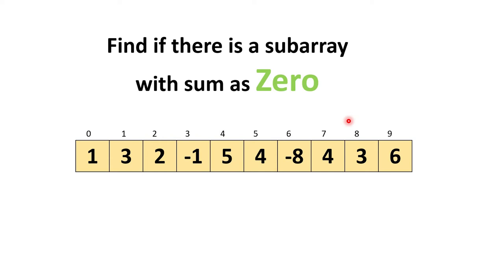Welcome to the channel. Today we will discuss a problem known as finding if there is a subarray with sum 0 present or not. First, let's clarify what a subarray is. A subarray means a subset of the given array. For example, in the array, elements like 2, -1, 5 or 1, 3, 2 or 3, 2, -1, 5, 4 are all subarrays of the main array — and the whole array itself can also be considered a subarray. What we need to check is if any particular subarray's total sum of elements equals 0.